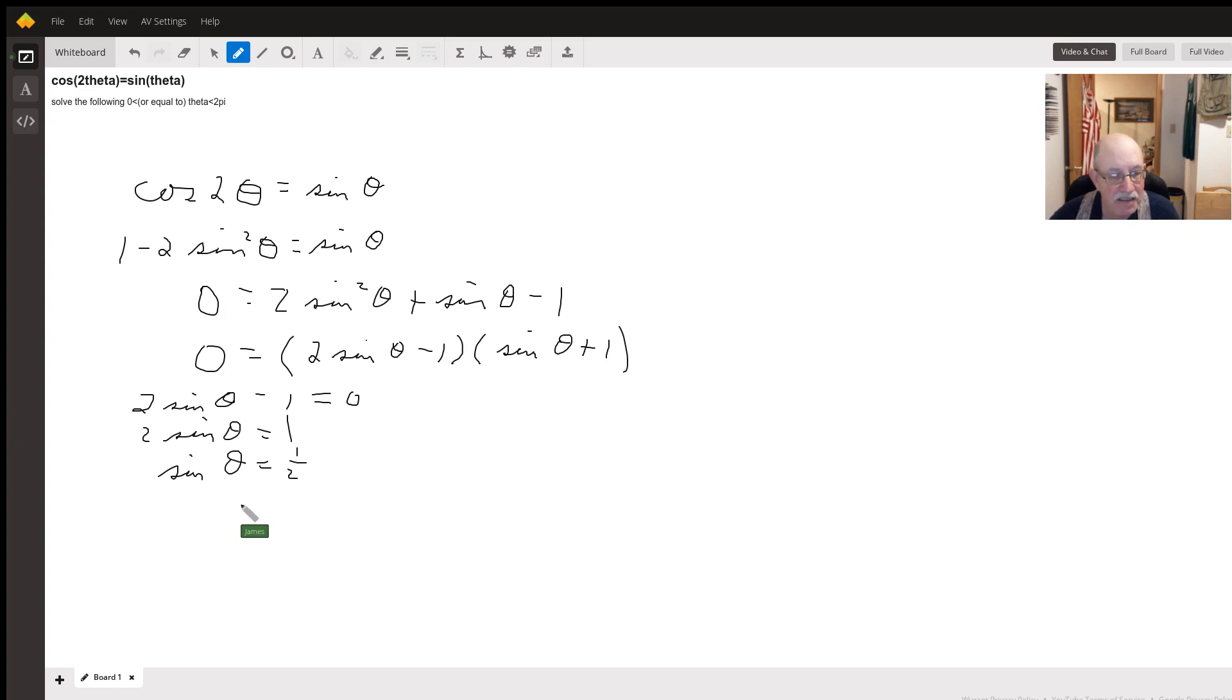So theta is going to equal the inverse sine of 1 half. The two angles that have a sine value of 1 half are pi over 6 and 5 pi over 6. So that's two of our answers.